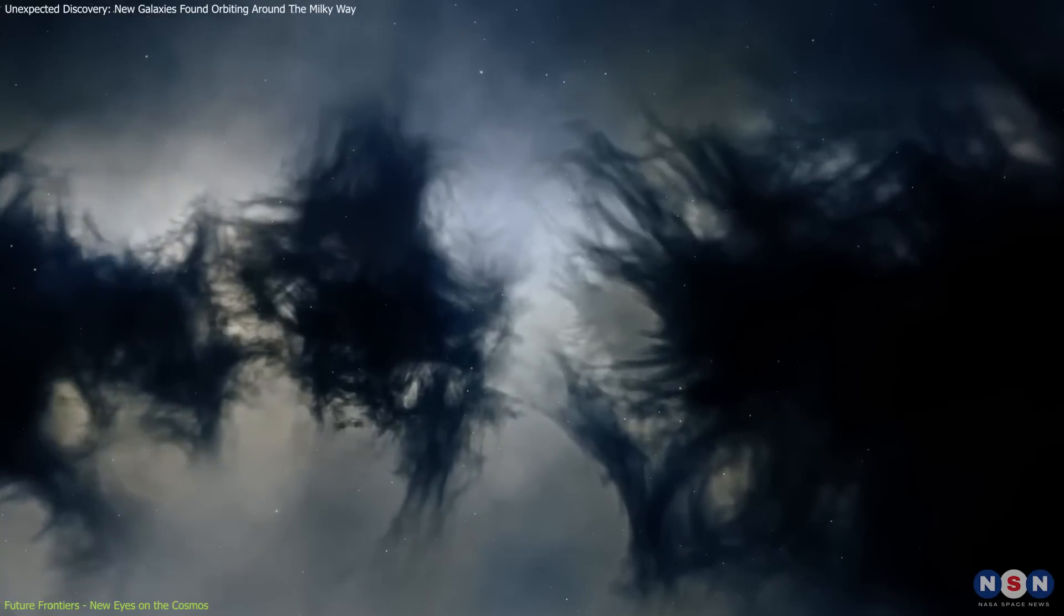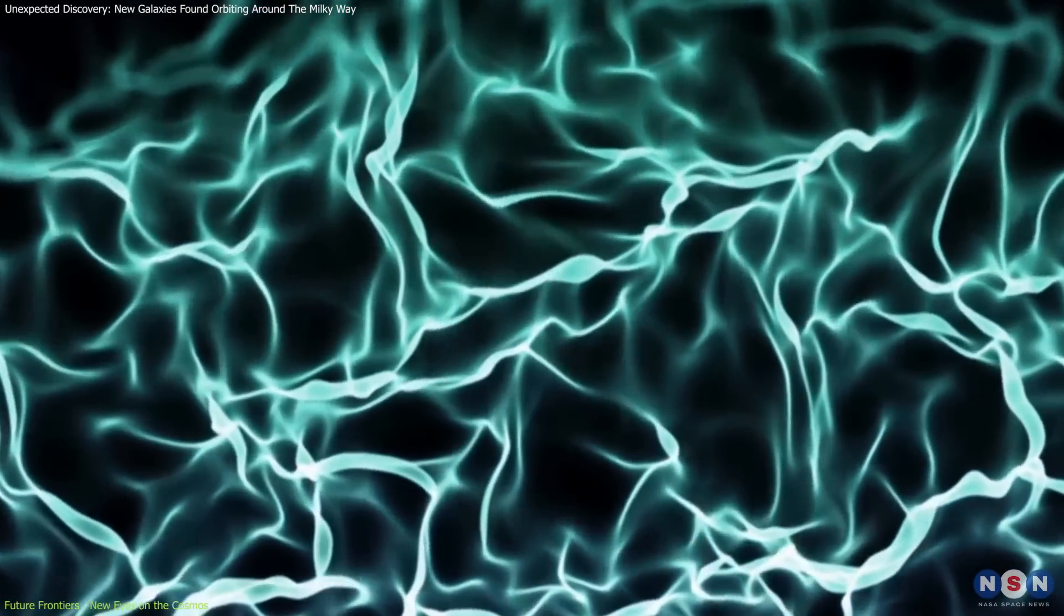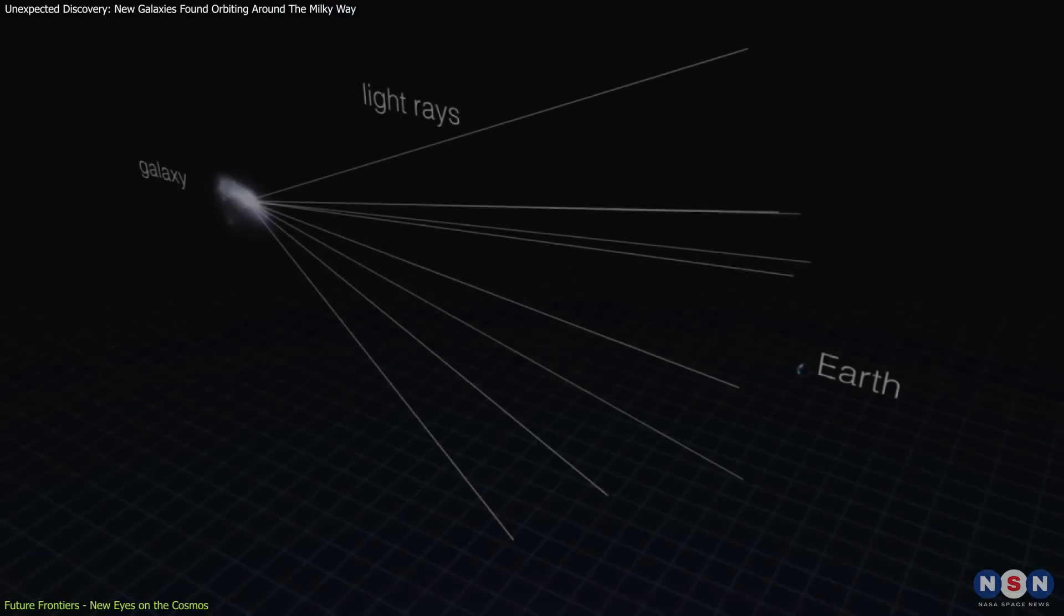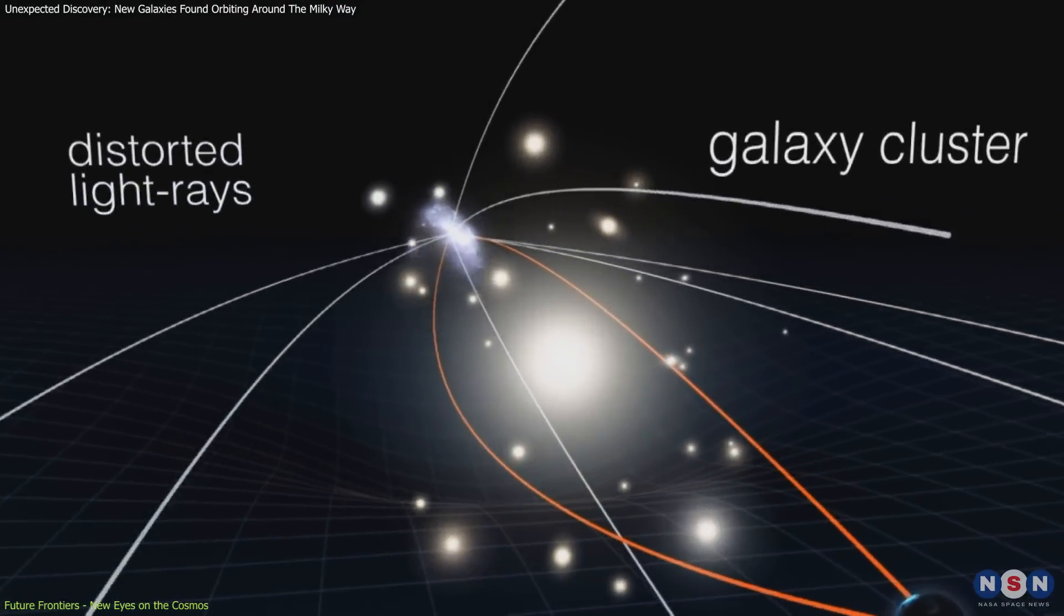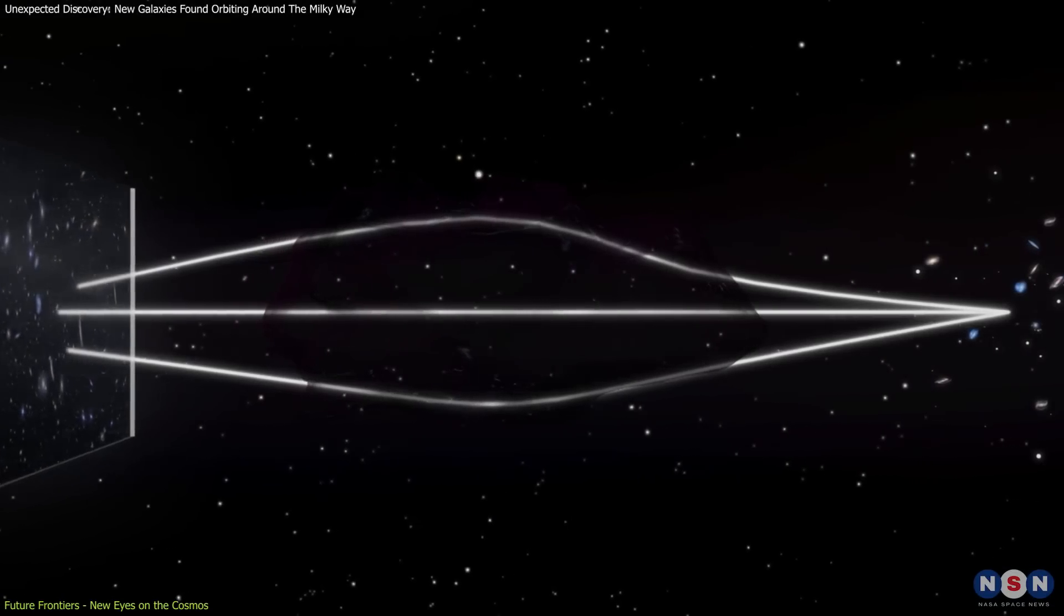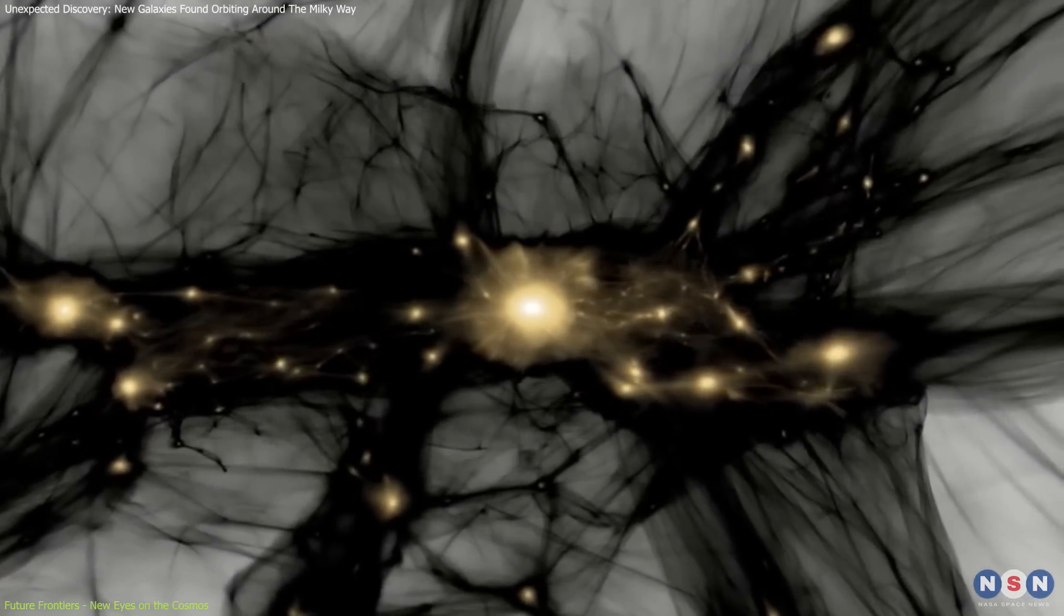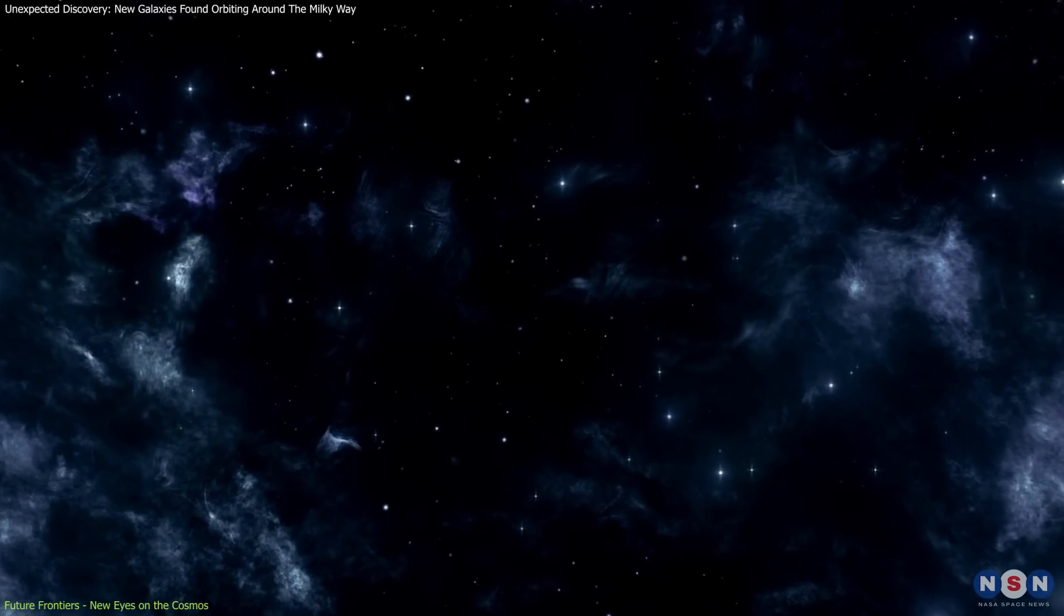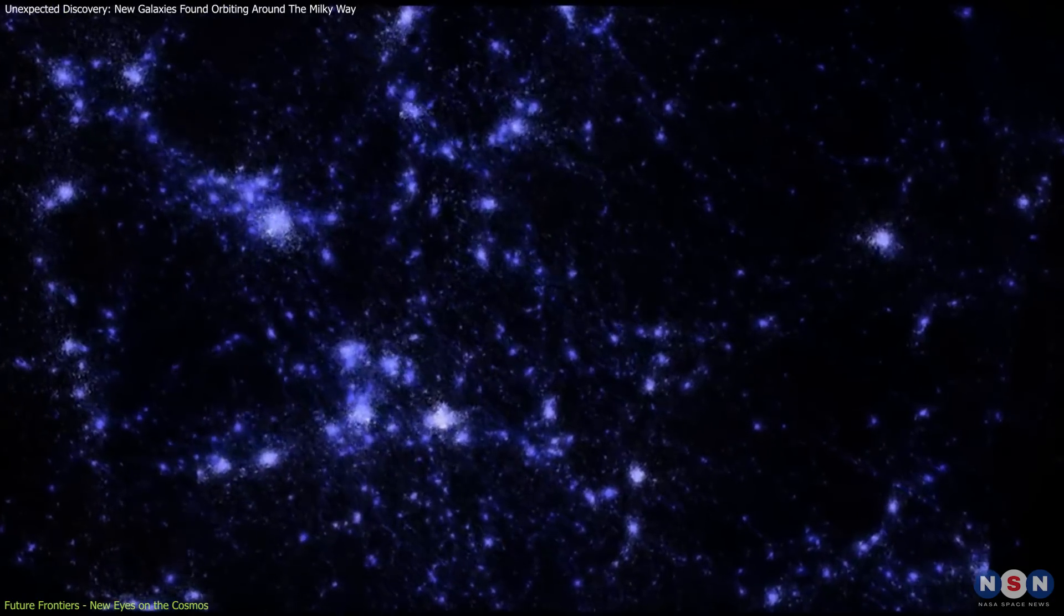It will also play a key role in mapping the distribution of dark matter and studying the effects of dark energy on the cosmic scale. By analyzing the bending of light, which is called gravitational lensing, caused by dark matter, astronomers can create detailed maps of its distribution across the sky. This will provide new insights into the nature of dark matter and its role in the structure and evolution of the universe.